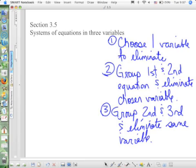Remember in the process of elimination, that we can multiply any equation by something to make that happen. Then we're going to group the second and third equation from the original listing and eliminate the same variable again.